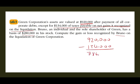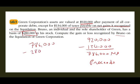Therefore, $786,000 is the net proceeds that Bruno would receive. We then take the net proceeds and deduct the basis. The basis in his stock is $280,000. As a result, Bruno would recognize a gain of $506,000.